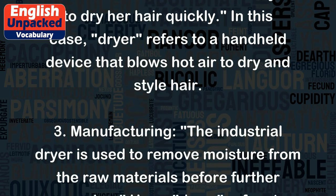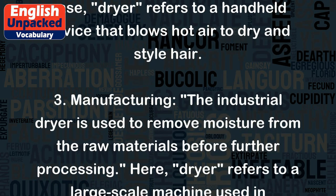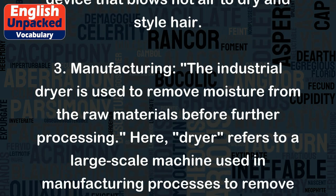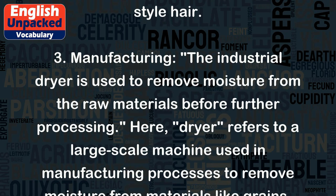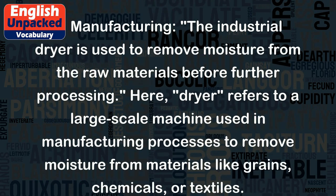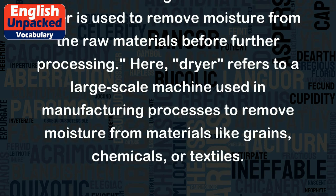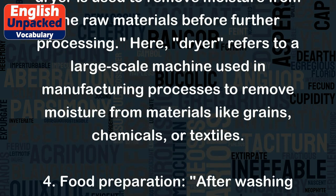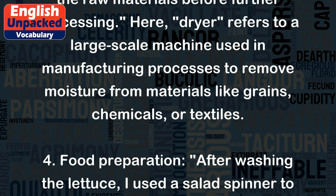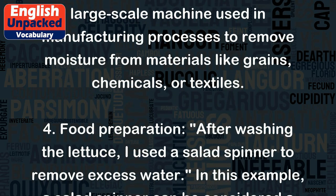3. Manufacturing: The industrial dryer is used to remove moisture from the raw materials before further processing. Here, 'dryer' refers to a large-scale machine used in manufacturing processes to remove moisture from materials like grains, chemicals, or textiles.